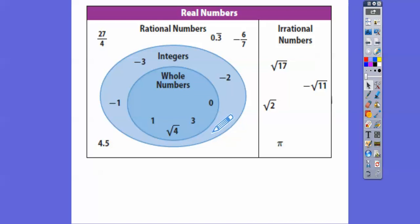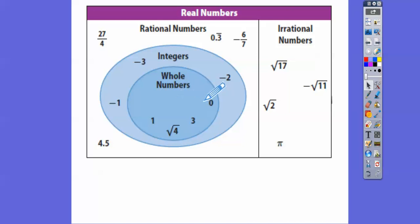Natural numbers would be like a little circle inside the whole numbers that starts with 1, then 2, 3, 4, 5, 6, 7, 8, 9, all the way up to positive infinity — all the positive integers. Remember, whole numbers start at zero. Then integers has all of the whole numbers, all of the natural numbers, and all of the negative integers also.